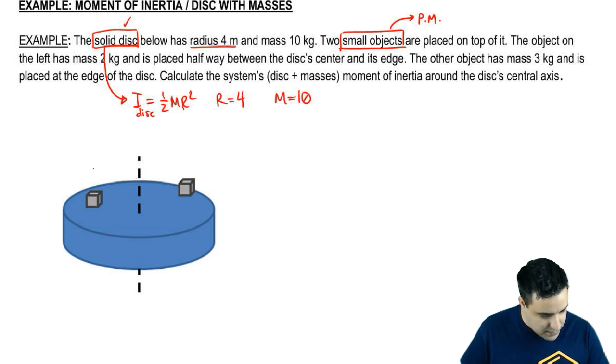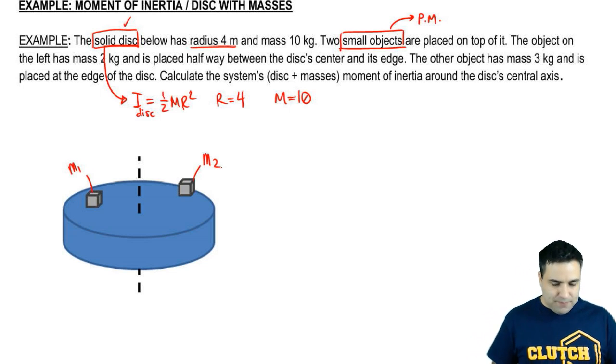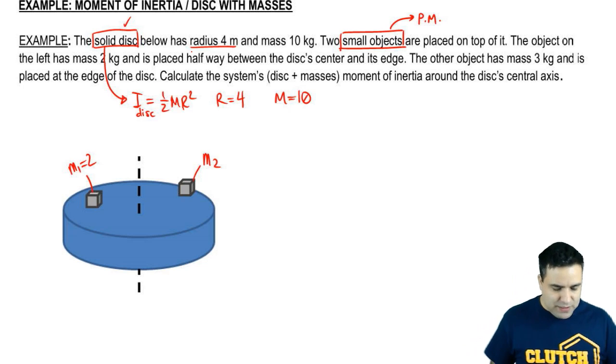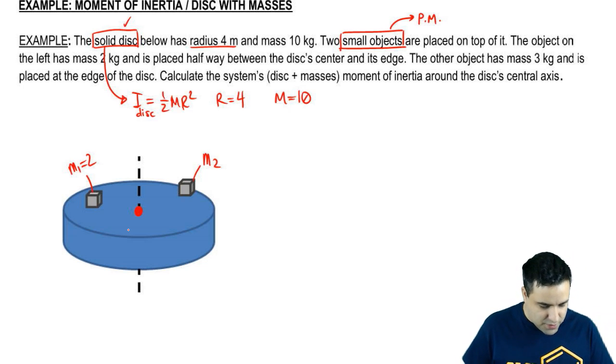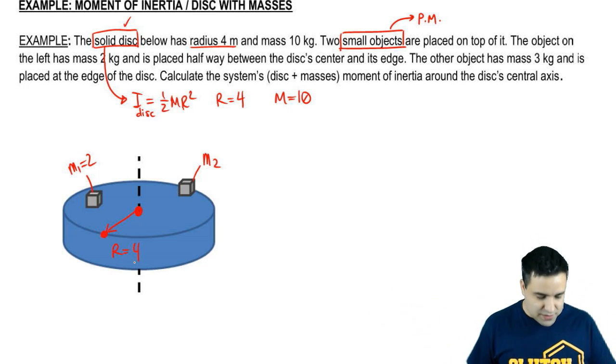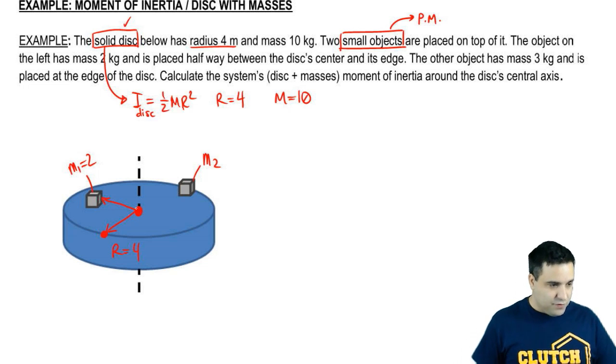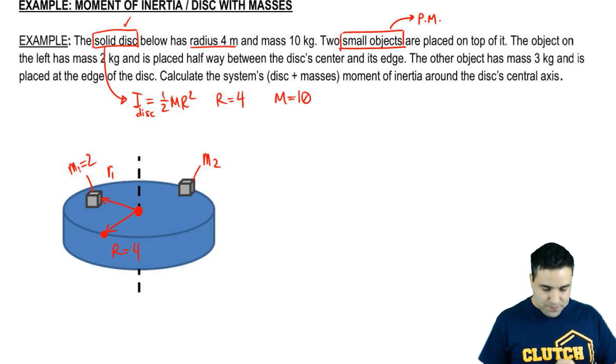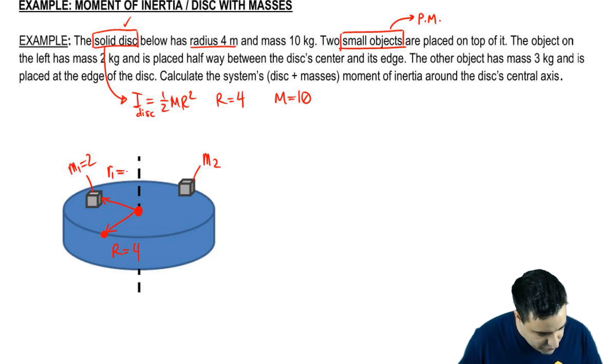So I'm going to call this 1, so this is m1, and this is m2. It says the object on the left has a mass of 2 kilograms, and it's placed halfway between the disk's center, so the center disk is here, and the edge. Now, the distance between the center and the edge is the radius, which is 4. If you are halfway between the center and the edge, your distance is half the radius. So this distance here is half the radius. So I'm going to call this r1 because it's the distance for mass 1, and it is half of the radius, so it's 2.